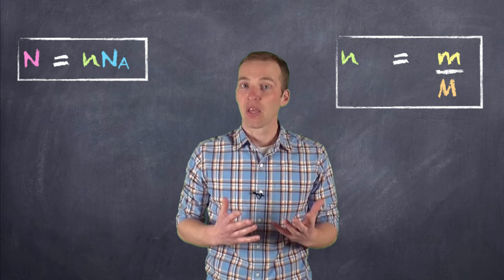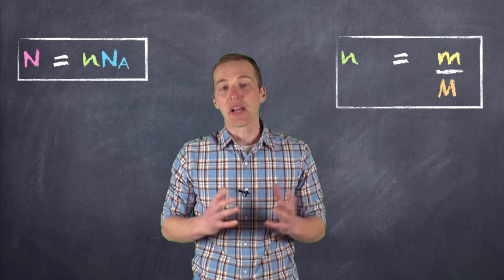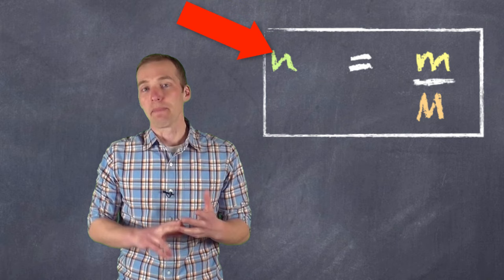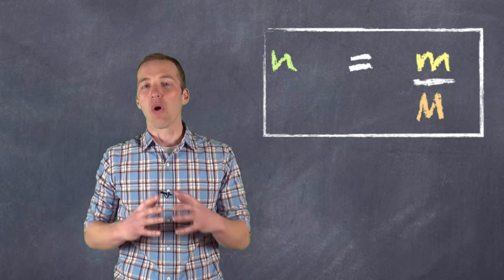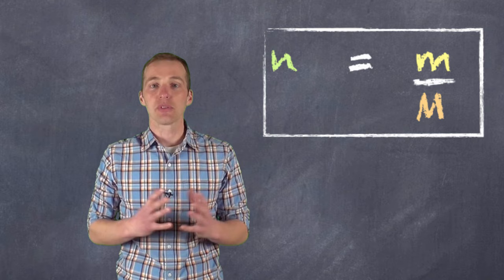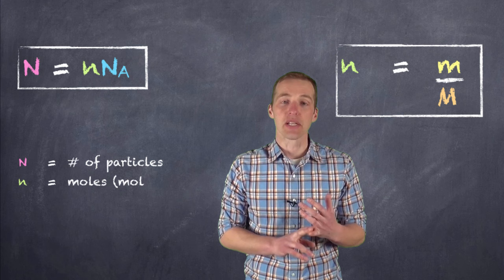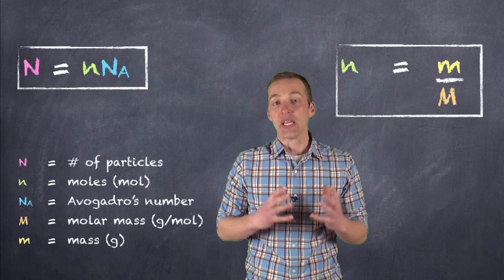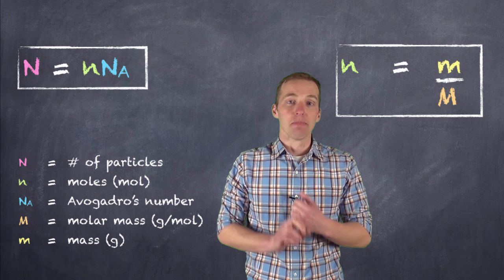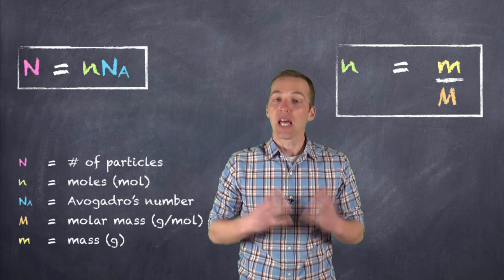There are two equations you really need to know. The first is n = m / M. This is the relationship between the number of moles, the mass of a sample, and the molar mass of the compound in question. The faster you memorize it and the more you use it, the easier chemistry will be. Lowercase n represents the number of moles, with units mol. Capital M represents the molar mass in grams per mole — obtained from the periodic table. Mass m is represented in grams, which makes sense given that molar masses are in grams per mole.